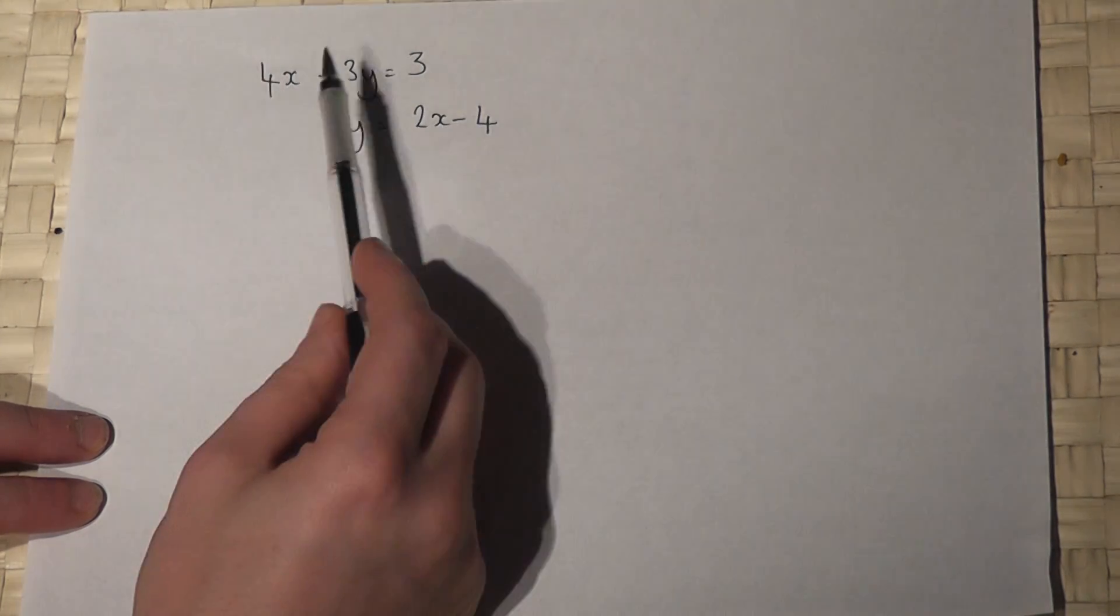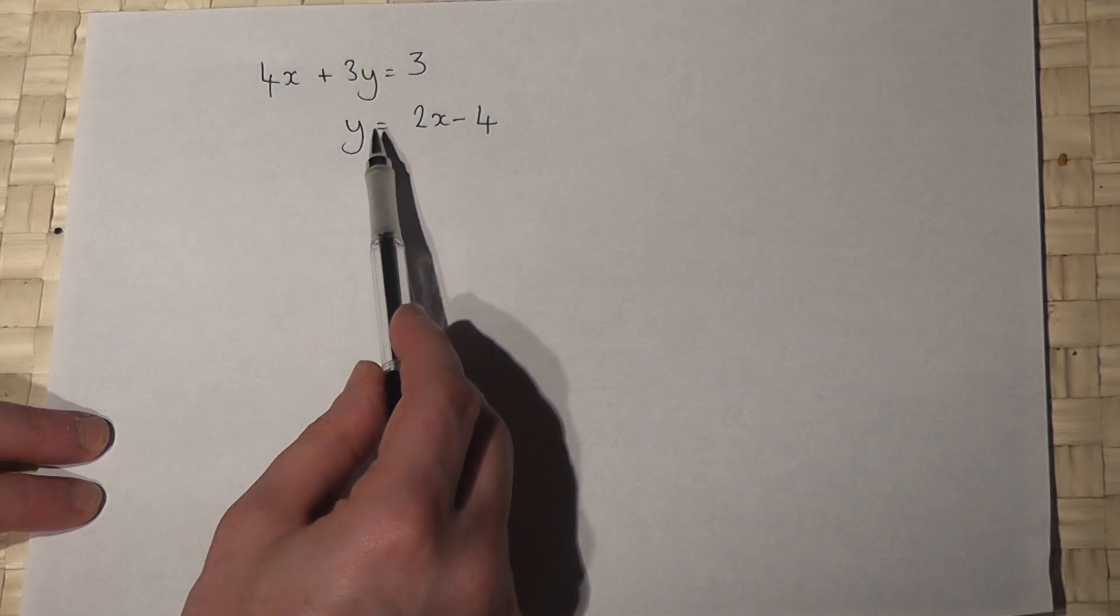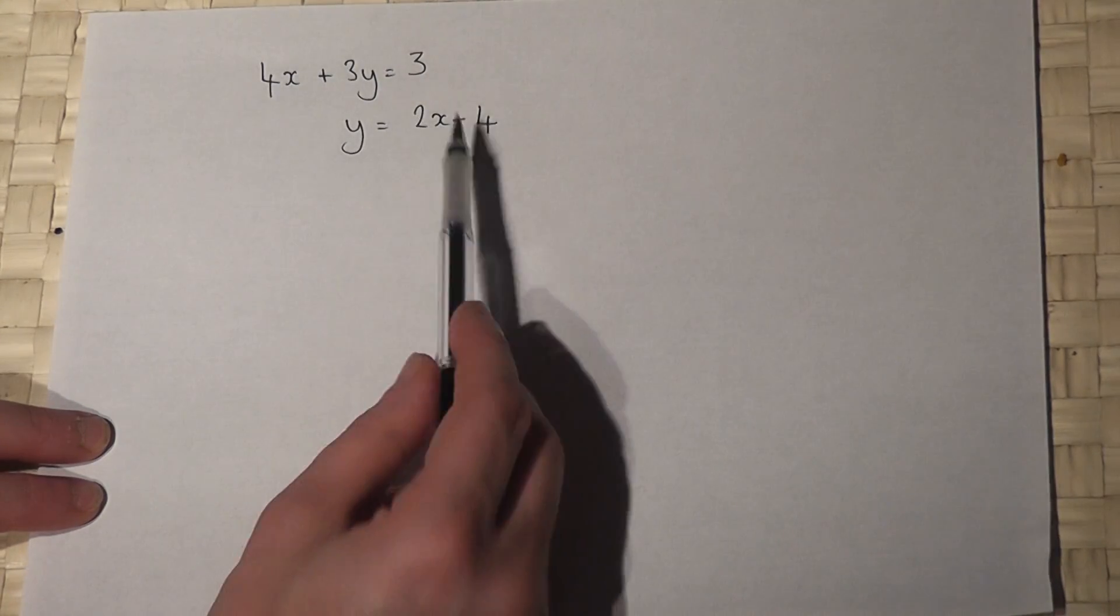we have an equation involving x and y, and a second one which has y equals, in this case, 2x minus 4.